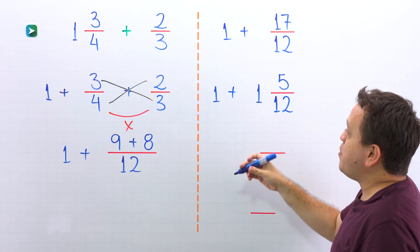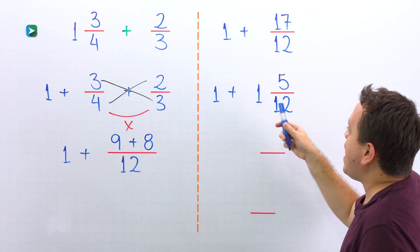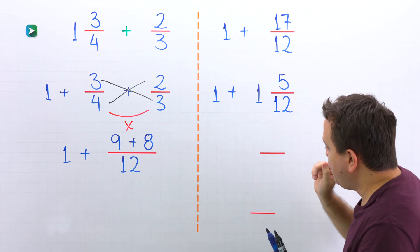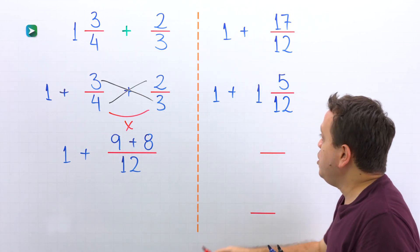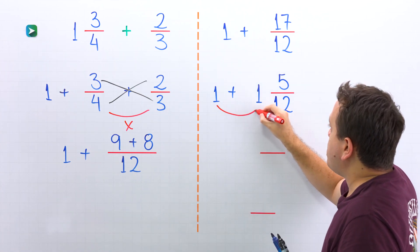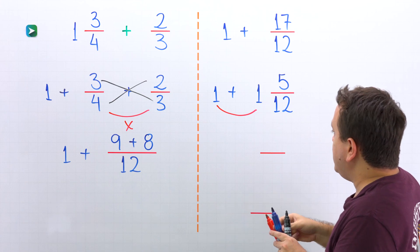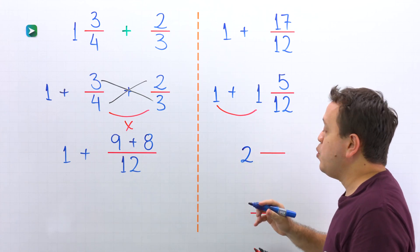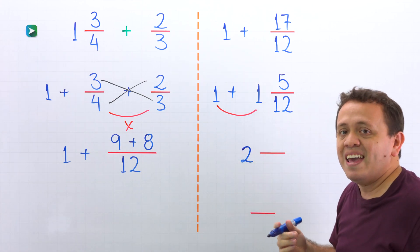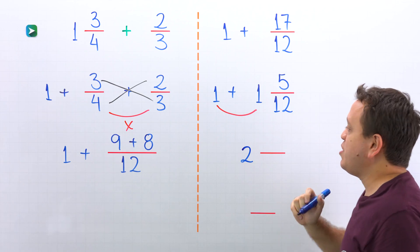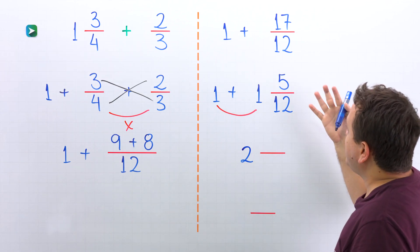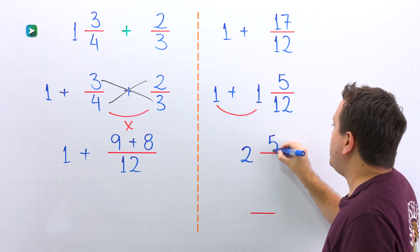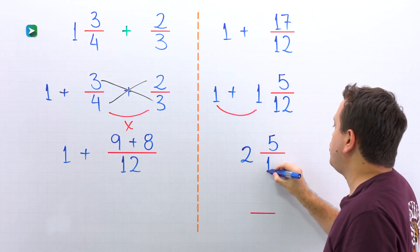And here we have the sum of a whole number and a mixed number. Don't worry — first we are going to add the whole numbers: 1 plus 1 gives us 2. Then we add the fractions. However, we only have one fraction here, and that fraction is 5 twelfths. The answer is 2 and 5 twelfths.